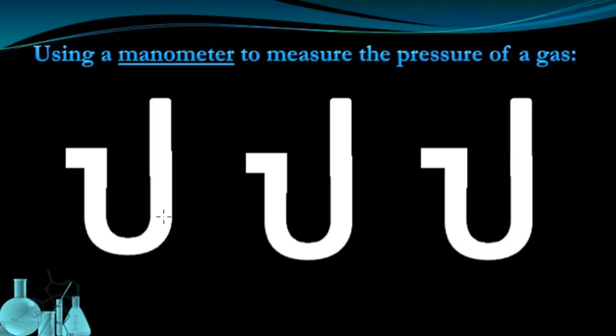A manometer is essentially a U-shaped tube. And I can attach something to either end, but we leave one end open. So let's say the top is open to atmospheric pressure. We have one atmosphere of pressure, which is 760 millimeters of mercury.